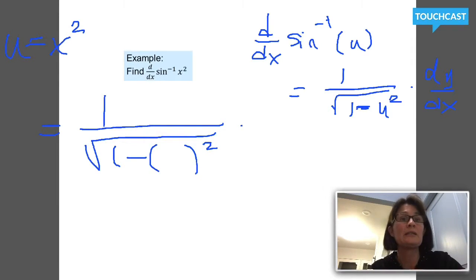So it's going to be 1 over the square root of 1 minus whatever u was, x squared, times du/dx. Well, we said that u is x squared and du/dx, the derivative of u with respect to x, is 2x.